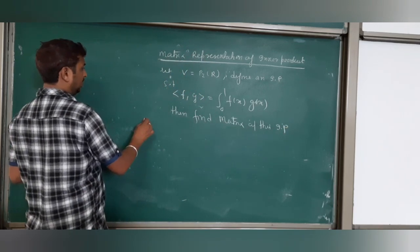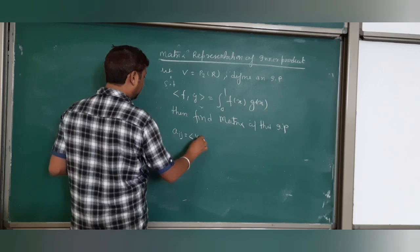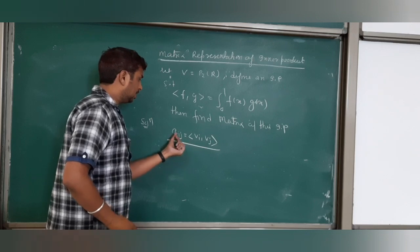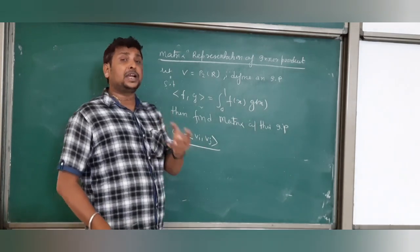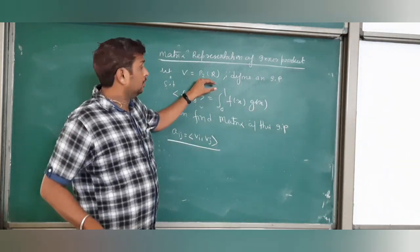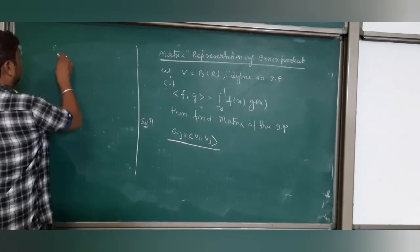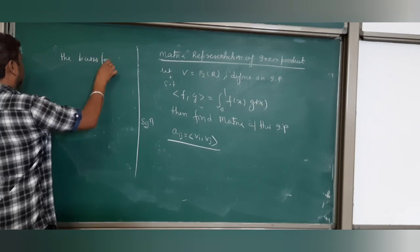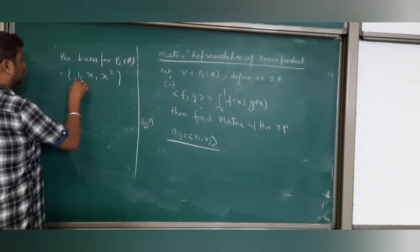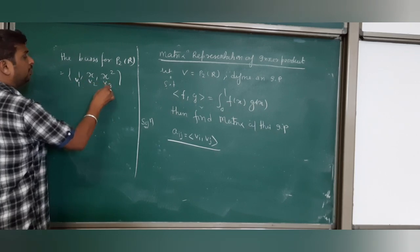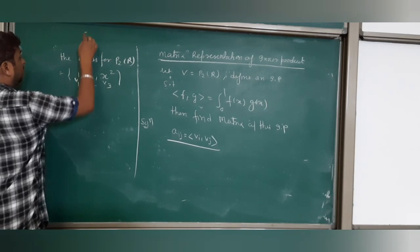Matrix element aij is always equal to inner product vi, vj, where vi, vj are standard basis vectors. They will give the vector space, so you know the standard basis. Suppose for P2(ℝ), the basis for polynomials of degree 2 is 1, x, x².